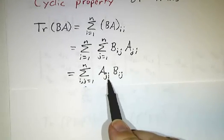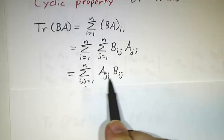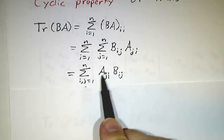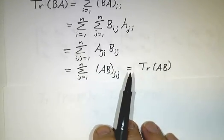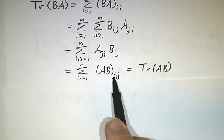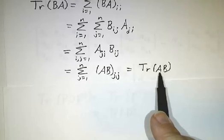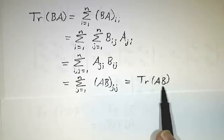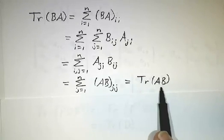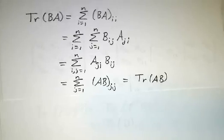Now you see, if you sum first over i, this is the jj entry of AB. And so you sum all that up, and you get the trace of AB. The trace of BA is the same as the trace of AB. AB and BA are different matrices, but their traces are the same.